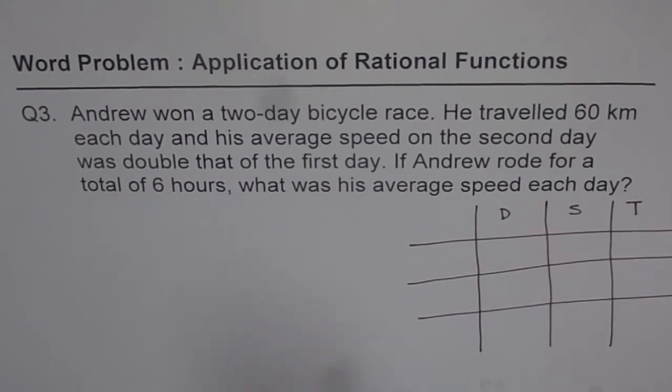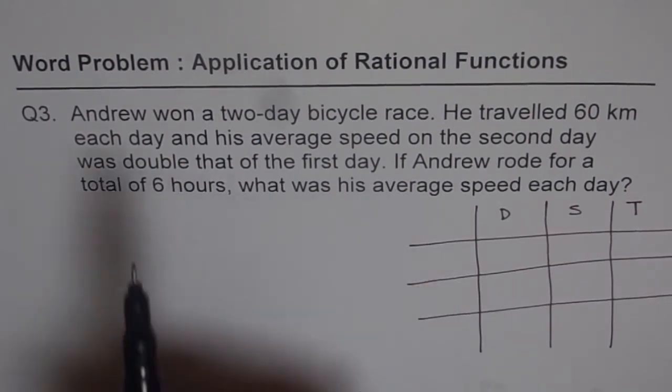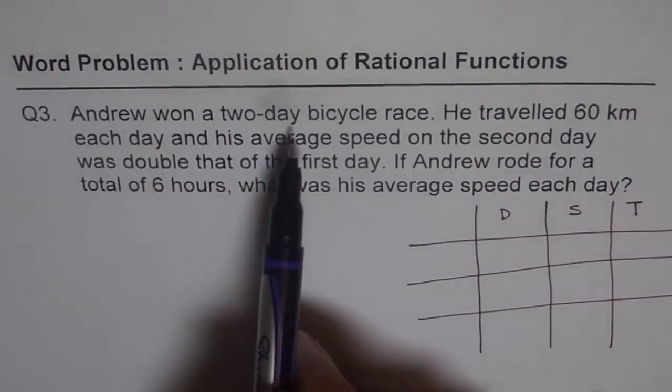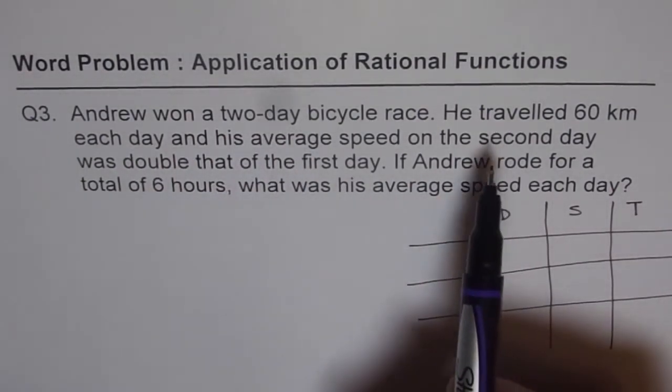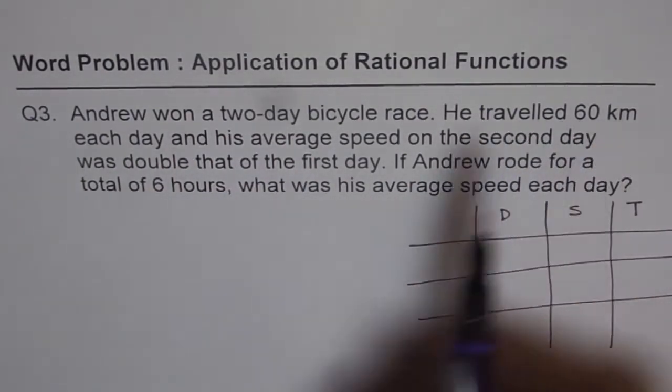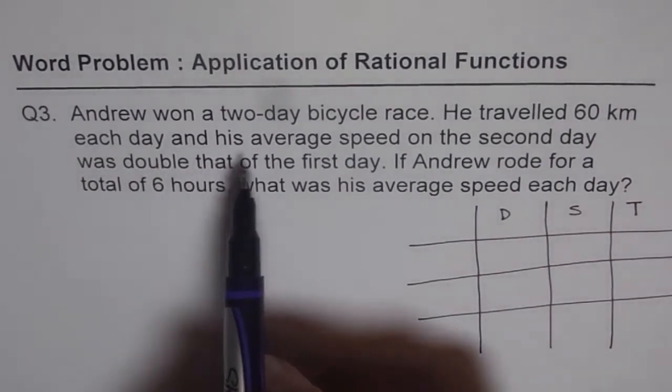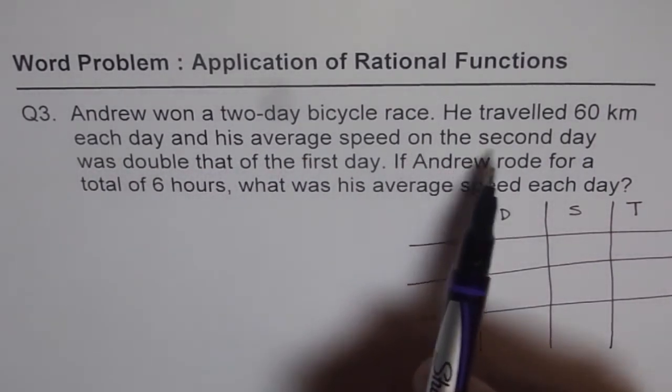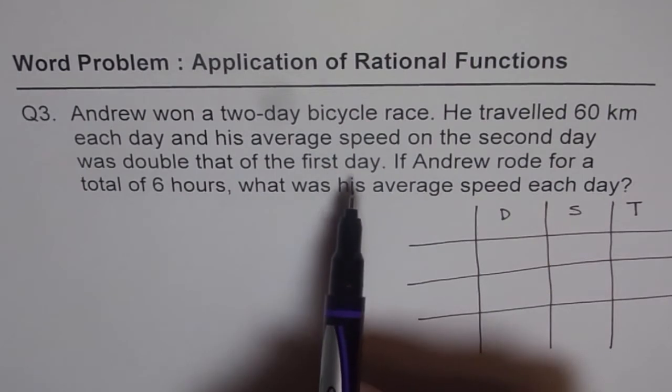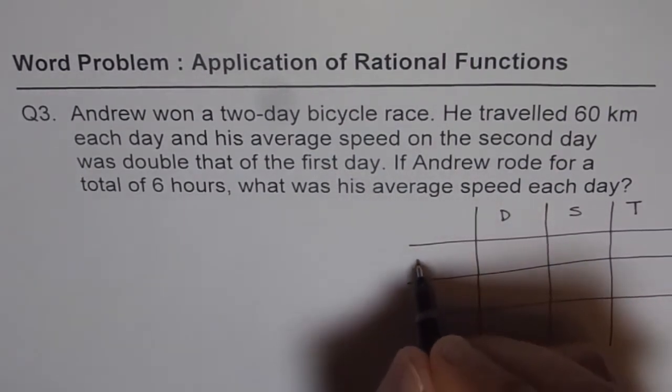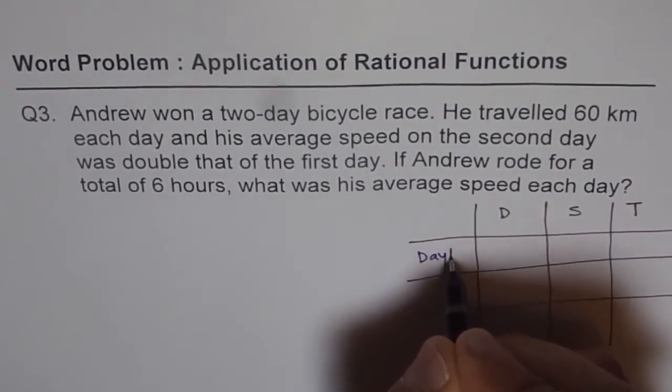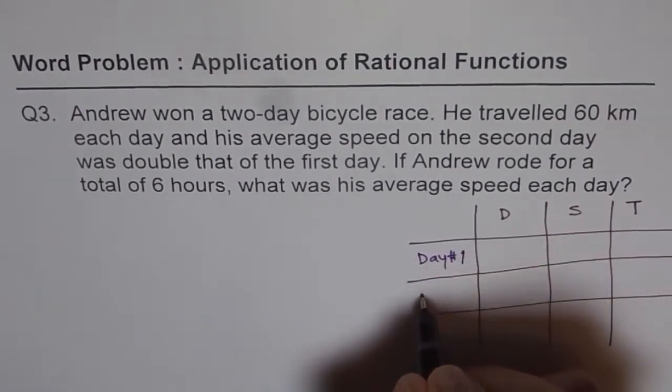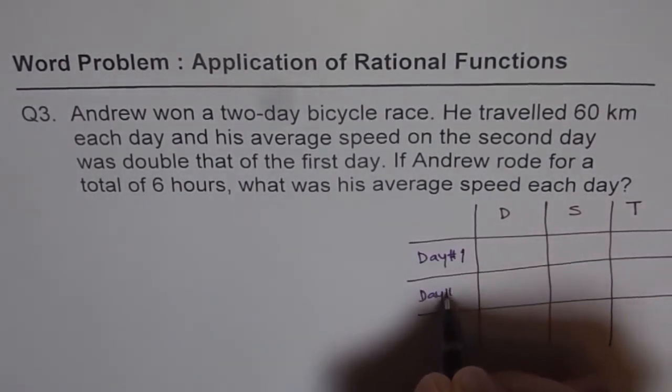Now for example here, we do have 2 events. Andrew won a 2 day bicycle race - that's not the 2 events. The events are: he traveled 60 kilometers each day and his average speed on the second day was double that of the first. So there are 2 days involved. Let's say day 1 and then we have day 2.